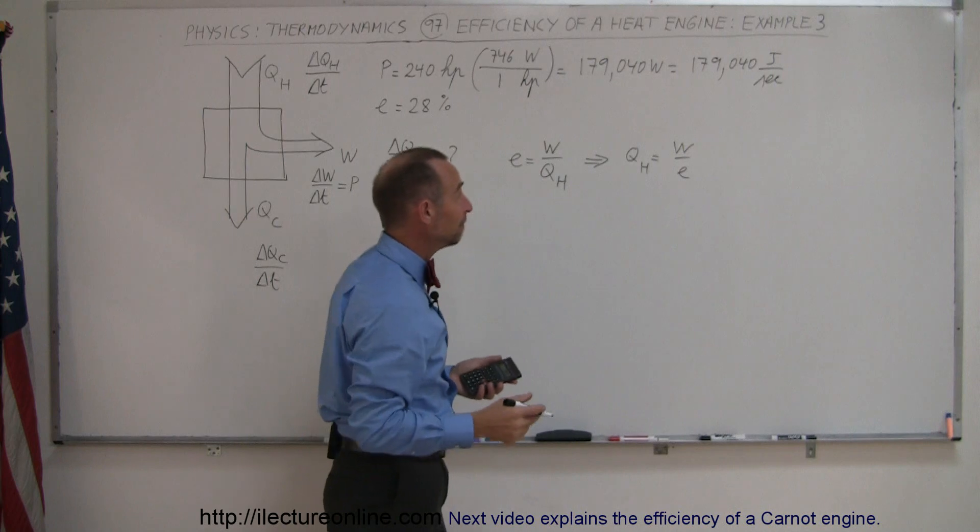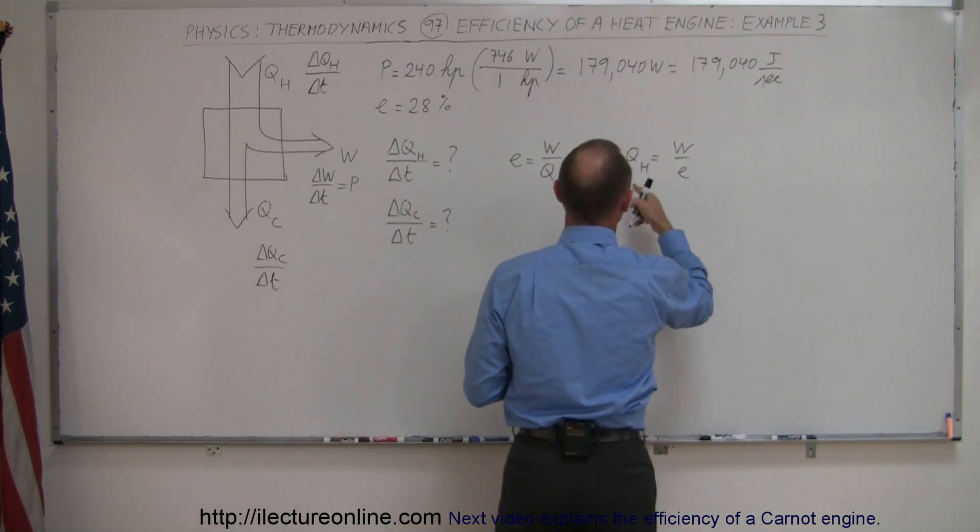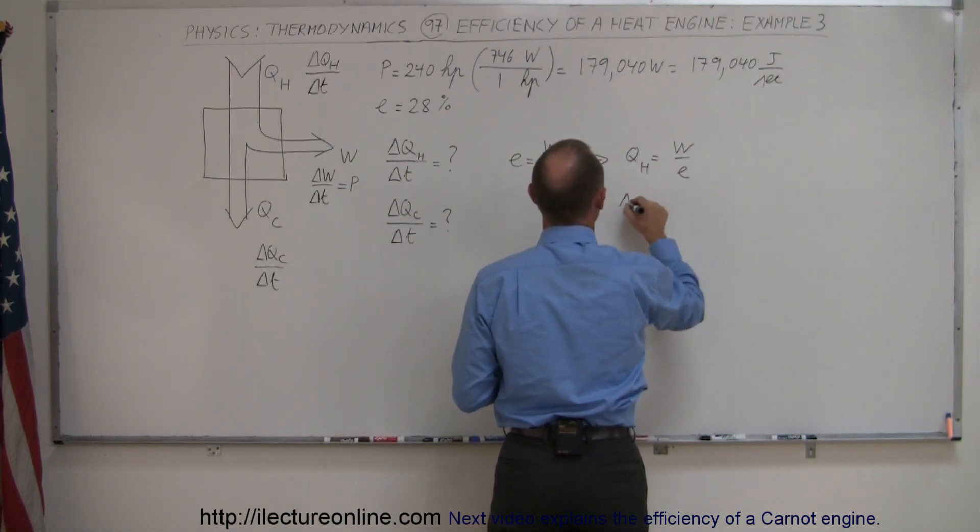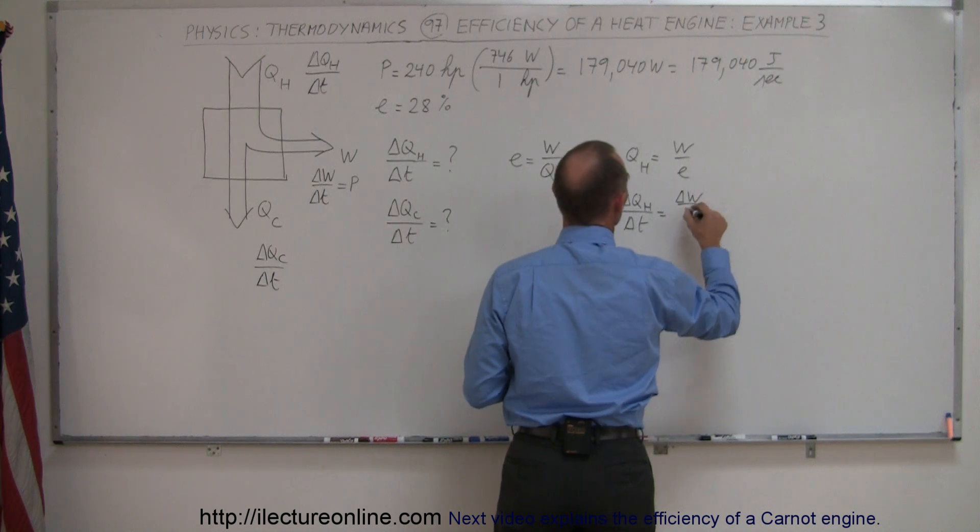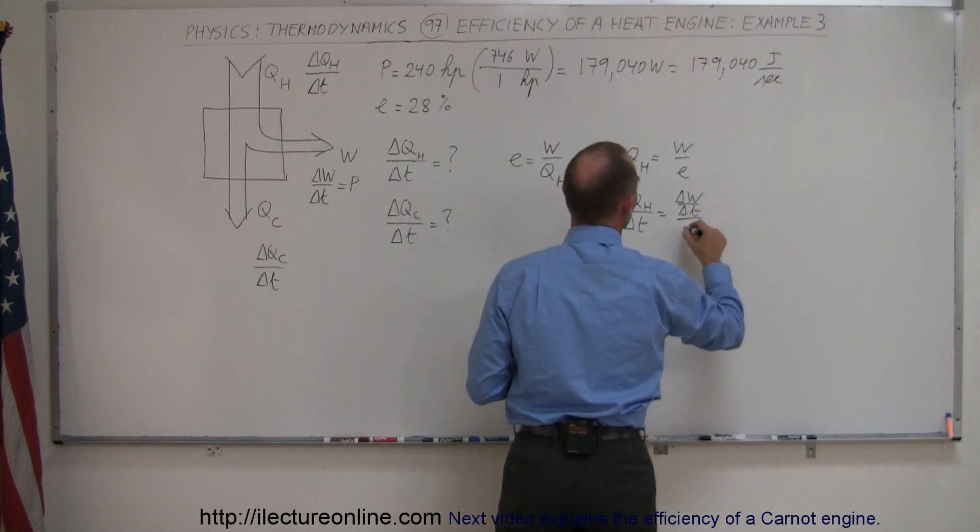And then if we divide everything by time, we can divide the left side by time. So we can say the rate at which heat is extracted from the hot reservoir per unit time is equal to the rate at which we do work per unit time divided by the efficiency.